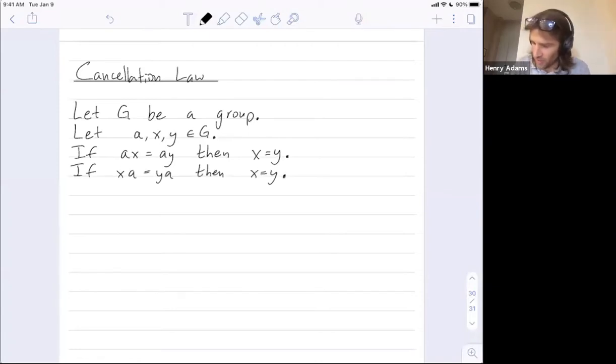Let's call those one and two. All right. So let's prove one. The proof of two is very similar. So suppose a times x is equal to a times y. We're trying to prove that x is equal to y.